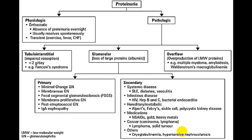In systemic causes: SLE, diabetes, vasculitis. In infectious diseases: hepatitis B, C, or HIV infection, and infective endocarditis. Hereditary varieties include Alport syndrome, sickle cell disease, and polycystic kidney disorders. Drug causes include NSAIDs, gold, and heavy metals. In the overflow variety, overproduction of low molecular weight proteins — classical example being multiple myeloma or amyloidosis — causes them to be easily filtered out.